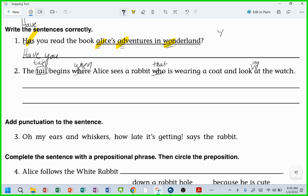All right, so now let's read it again. The tail begins when Alice sees a rabbit that is wearing a coat and looking at the watch. Jack, what should it be? A watch. Now let's read it. The tail begins when Alice sees a rabbit that is wearing a coat and looking at a watch. Does that sound better now? One, two, three, four, five.